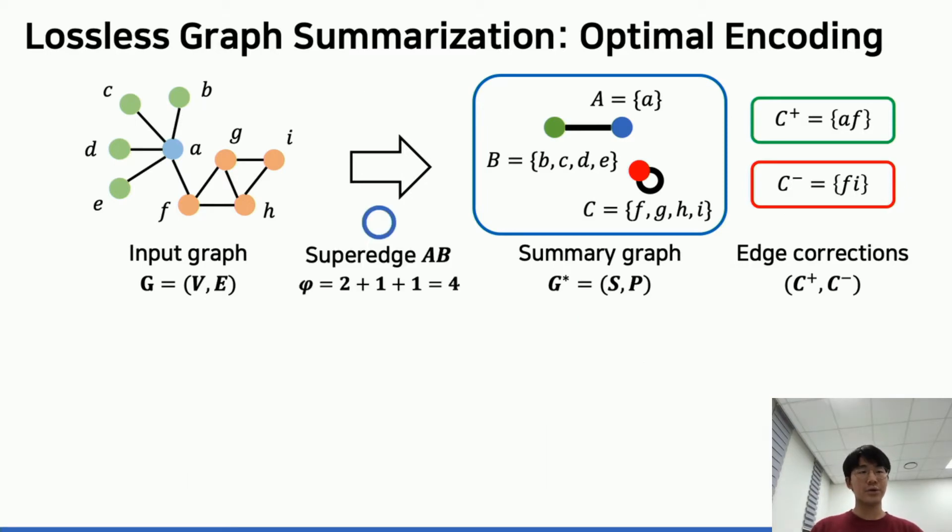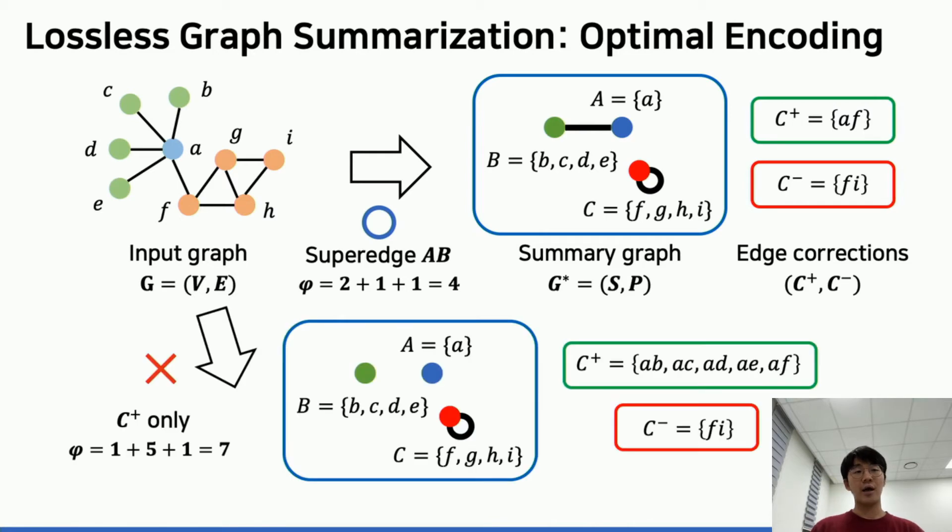For the toy graph, we should use a super edge between super nodes A and B because using the super edge only needs 1 edge, while using C^+ needs 4 edges. However, we have to only use C^+ residual graphs between super nodes A and C, because using only C^+ needs 1 edge while using a super edge and deleting 3 edges leads to 4 edges in total.